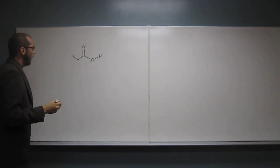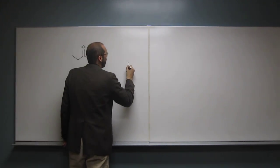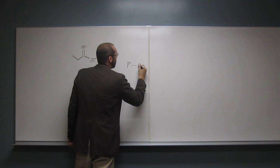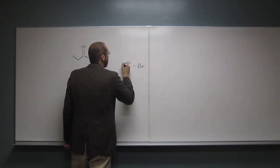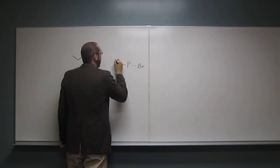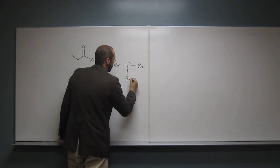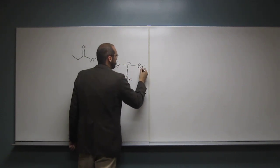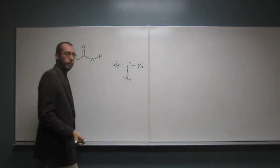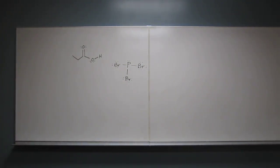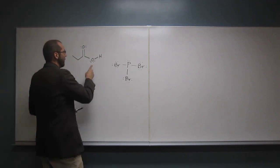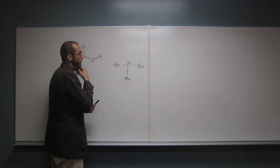Remember, phosphorus is oxyphilic. Even though it's got those lone pairs on there, and we don't often like to attack things with lone pairs, phosphorus can be attacked at that position. It's oxyphilic, so the oxygen will attack it.